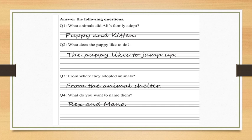Now you can write down here, from the animal shelter. Next, what do you want to name them? You can keep their names. I have Rex and Mano. Okay, you can keep them.